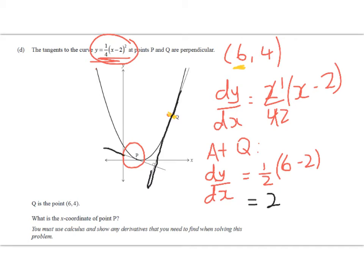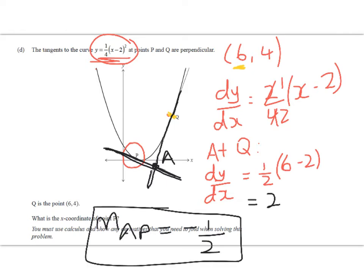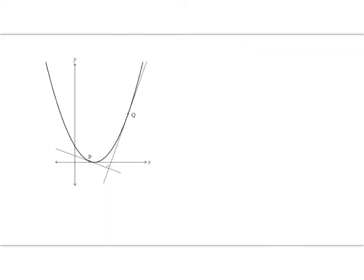On the next slide, I'll write some more working out for this, but what we can see going on here is that we've got this line. Now, we don't know where point P is, but we know that its tangent is perpendicular to the one between Q and the intersection point. I'm going to call that point A. Because perpendicular lines have gradients that multiply to negative 1, we know the slope of AP must be equal to negative 1/2.